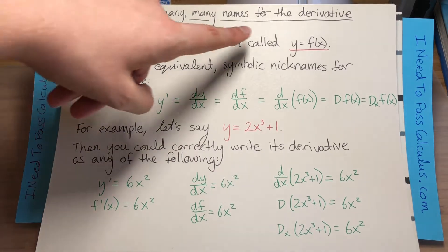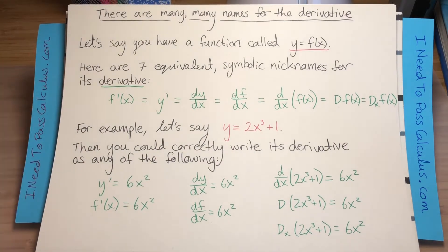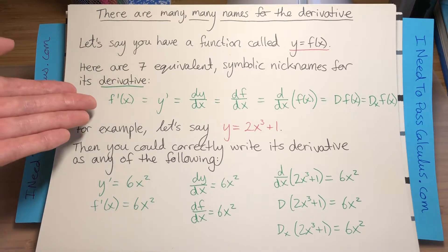Let's say you start with a function called y equals f of x. Then there are seven equivalent symbolic nicknames for its derivative. There are others, but here are the most common ones.